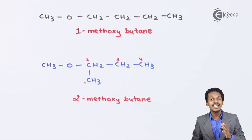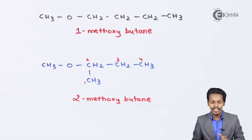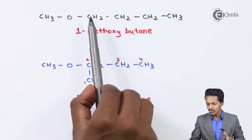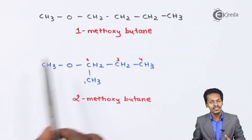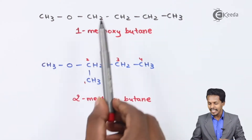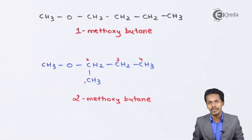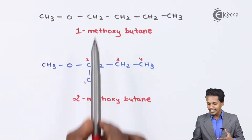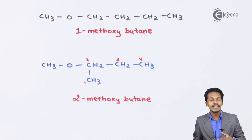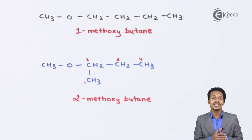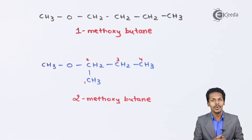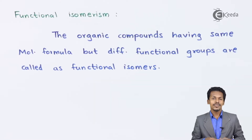The difference depends on the arrangement of the parent alkane. In the first case the carbon chain is straight, while in the second we can see a branch. That is why these two are chain isomers of each other, and the phenomenon of having these two isomers is known as chain isomerism.